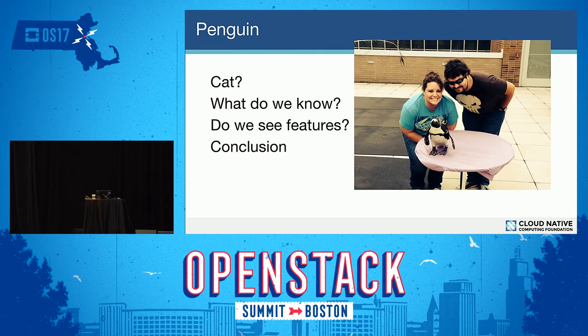We get to here. We notice myself, my fiancé, and a penguin. We ask the system: is this a cat? I don't see any of the features I noticed before — no circular face, no tail, no fur, no small nose, no pointy ears. This isn't a cat.